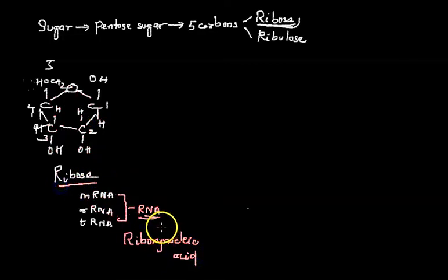Now there is another form of pentosugar that is present and this time it is specific only to DNA. So let us draw that pentosugar structure. Let me draw that. And there is one here. HOCH2, right.